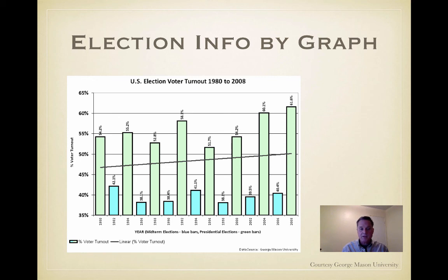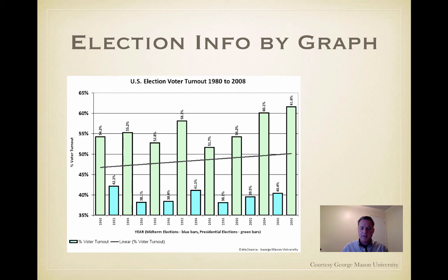Some states are using early voting — I think there are 32 states using it. California is not one of them. Colorado is the farthest west state I know of that allows early voting, and Colorado along with Oregon has all-mail-in elections with no precincts. California is at a tipping point where the number of absentee ballots is exceeding the number of people who show up at the polls.